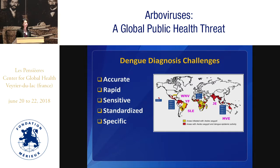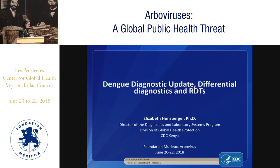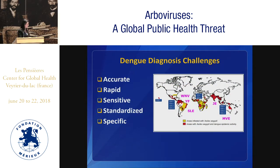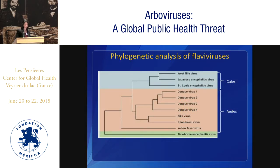I think one of the biggest challenges that we have with dengue diagnostics is how do we design a diagnostic test that's accurate, rapid, sensitive, and standardized when we have multiple flaviviruses circulating throughout the world, as Duane had mentioned before, as well as Zika now in multiple regions of the world.